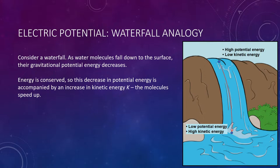Going all the way back to Physics 1 concepts, think of this waterfall where we have a water molecule at the top falling down. As this molecule moves down the waterfall, it's losing potential energy. When it's up high, it has a lot of gravitational potential energy, and then it's moving closer to the ground where that potential energy is lower. But energy is conserved — it has to go somewhere. So as it loses potential energy, it is gaining kinetic energy, the energy of motion. In other words, it picks up speed and accelerates.